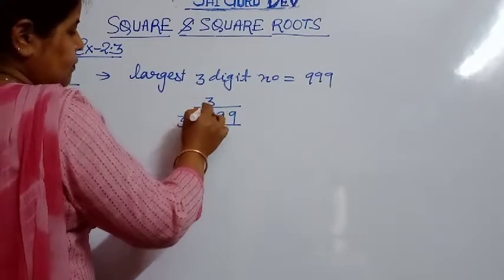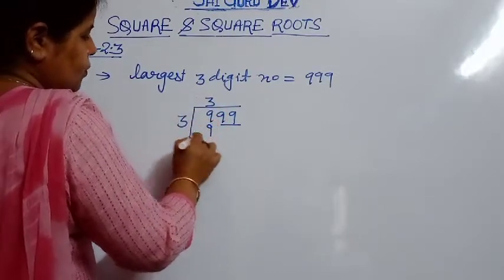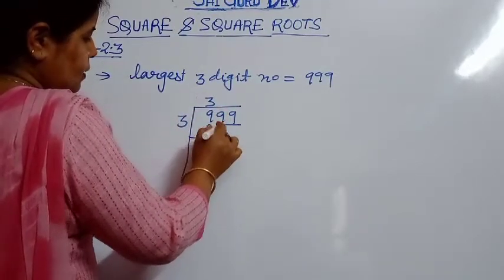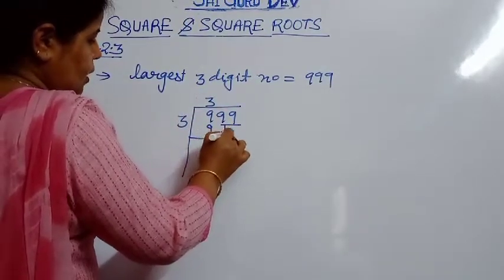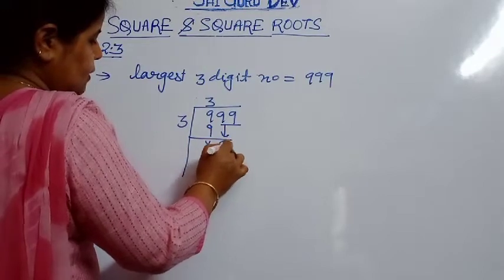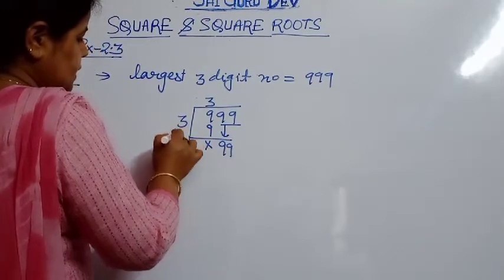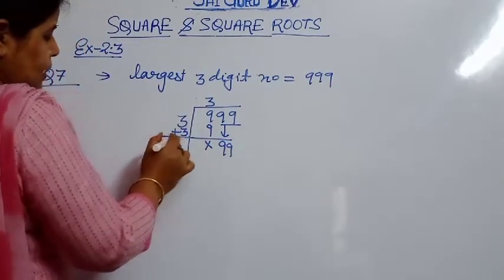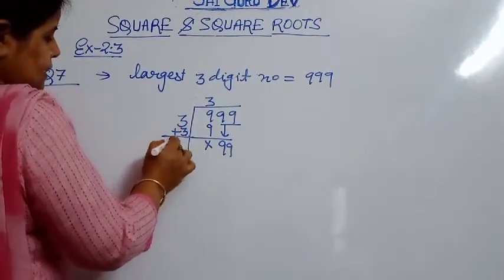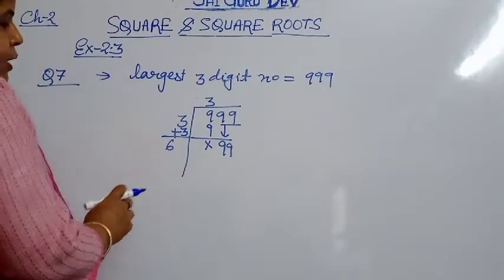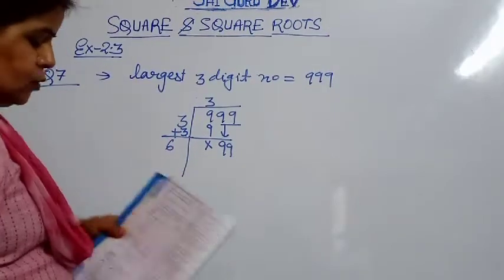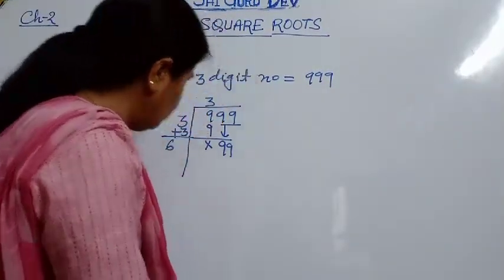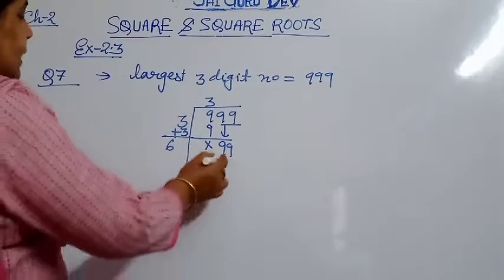3 times 3 is 9, so we write 3 and nothing is left. Bring down 99, making it 99. Add 3 plus 3 to get 6. Now we have to select a digit such that 6-something times something is nearest to 99.